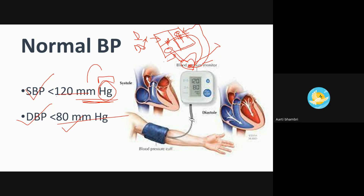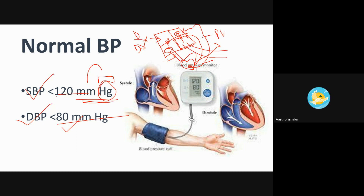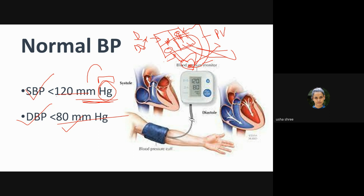From the left ventricle, blood goes to the aorta, which then branches into arteries and arterioles to all parts of the body. The aorta is the artery that carries oxygenated blood from the left ventricle to all parts and all sides of the body.